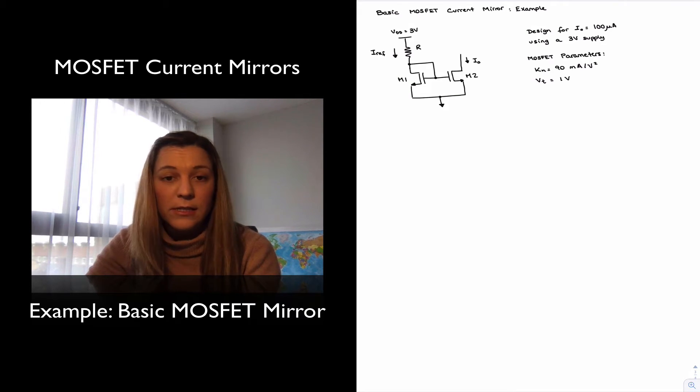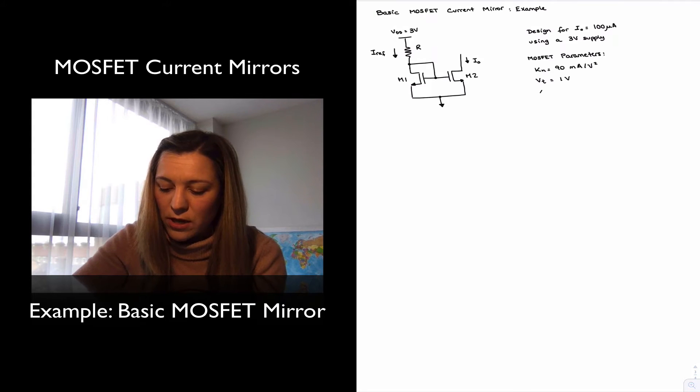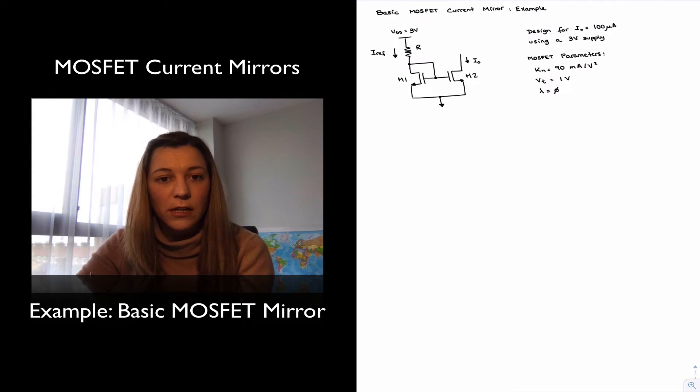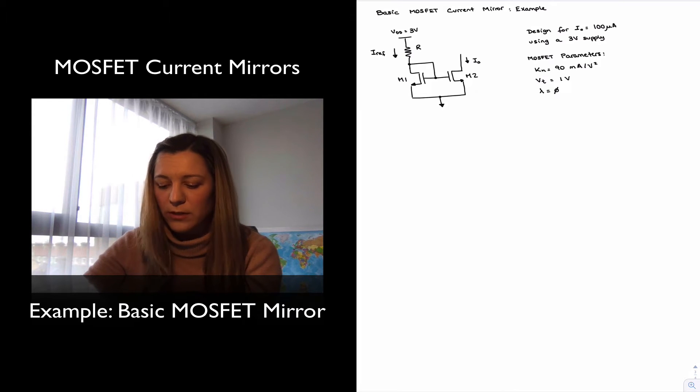We want to design the circuit for an output current of 100 microamps using a 3 volts VDD supply. Our MOSFET parameters are KN being 90 milliamps per volt squared, the threshold voltage is 1 volt. And I'm going to add my lambda equal to 0, so I'm going to neglect the channel length modulation effects. Or in other words, assume that the output resistance of the transistors is equal to infinity, its ideal value.